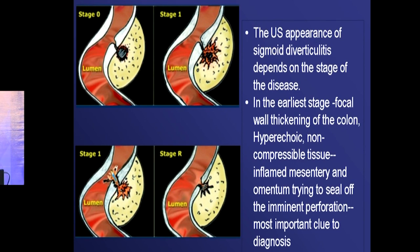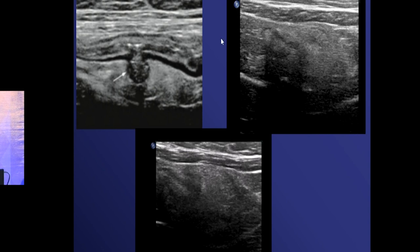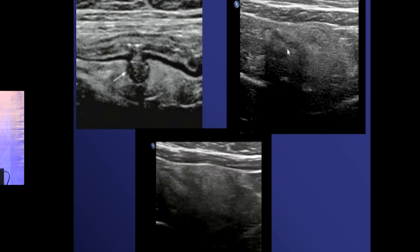The ultrasound appearance depends on the stage of disease. In early stage, there is focal wall thickening with hyperechoic non-compressible tissue around it — inflamed mesentery or omentum trying to seal off imminent perforation. That is stage one. Once the abscess decompresses back into the colon the patient feels better — that is the stage of resolution. The patient complains of pain at one side and with a high-frequency transducer you see fat stranding.